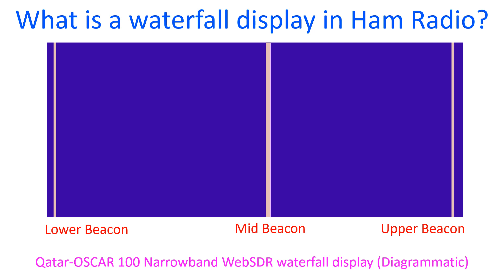In ham radio transceivers, a waterfall display is an almost real-time display of activity on a particular region of the amateur band. It is seen as a chart which changes over time, with frequency on the horizontal axis and time on the vertical axis. Signal strength is represented by the colour density of the display.